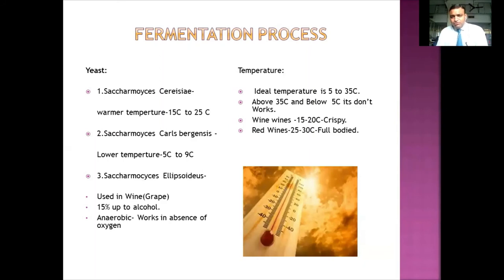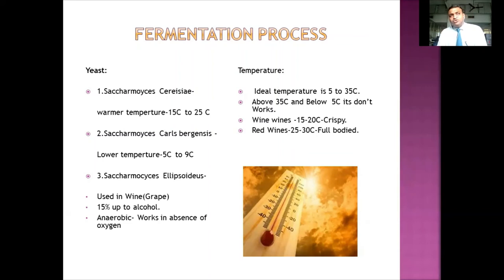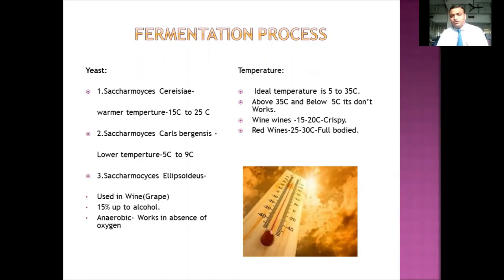Next is temperature. Temperature is very important to activate yeast and get the fermentation process going. The ideal temperature range is 5 to 35 degrees Celsius — only within this range will yeast live and work, releasing ethyl alcohol and CO2. Different drinks require different temperatures: white wine needs 15 to 20 degrees; red wine needs 25 to 30 degrees; light beers need 5 to 9 degrees; stronger beers need 15 to 25 degrees.